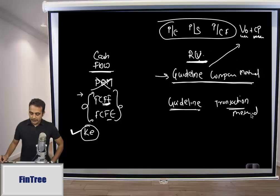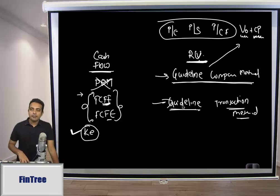What would be a guideline transaction method? Here you find out if there is a transaction happening in the similar space in the last one or two years. There have been transactions for almost all the online e-commerce companies - Snapdeal, Myntra, all these guys have received funding. Then you find out what is the multiple at which they received funding and then using that you come up with a valuation. There is no need to add control premium because those transactions anyways reflect premium on those transactions.